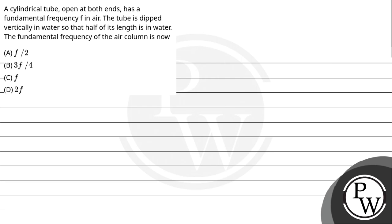Let's read the question. A cylindrical tube open at both ends has a fundamental frequency F in air. The tube is dipped vertically in water so that half of its length is in water. The fundamental frequency of the air column is now: option A, F/2; option B, 3F/4; option C, F; and option D, 2F.